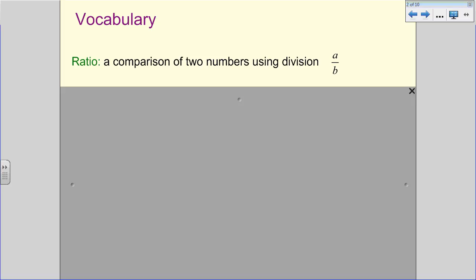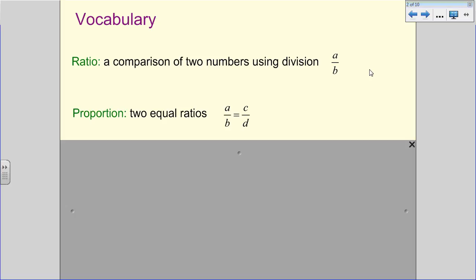And so then a proportion is two equal ratios. So we'd say A over B is equal to C over D. So we know that something like two-fourths is equal to one-half. That's a proportion.